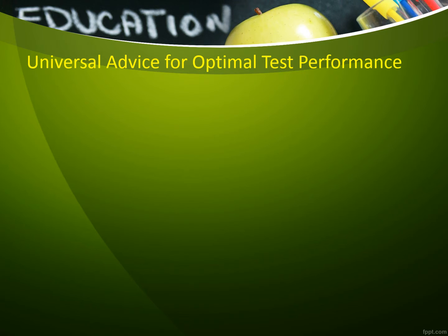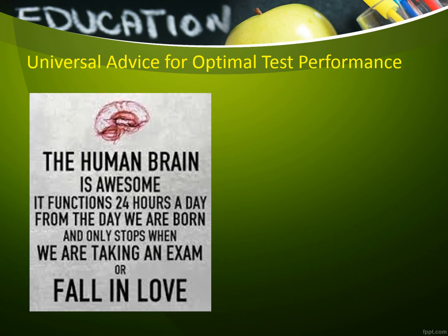All OTC exams through the ASN program will be given one question at a time. For each 50 to 75 question exam, you will be given one hour and 15 minutes. If it's a 75 question exam, you will be given two hours. If the option is available, review each question that you did not get correctly once you have obtained your score. If you must wait, as soon as the exam is reopened for review, then review your answers to determine the reason you might have gotten any missed questions wrong. The human brain is awesome — it functions 24 hours a day from the day we are born, and only stops when we are taking an exam or fall in love.